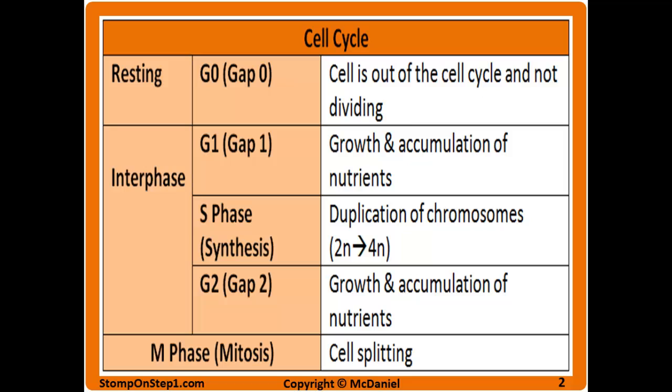Starting with the resting or lazy phase, G0 — in this phase, the cell is out of the cell cycle and it's not dividing or doing really anything at all. It's waiting to be recruited into interphase and the rest of the cell cycle. G1 phase is where we're growing and accumulating nutrients to get ready for cell replication. The S phase is where we double the amount of chromosomal material in the cell so that it can divide into two identical daughter cells. The G2 phase is the second growth phase where we're getting even bigger and preparing to split. And then finally, the M phase, which stands for mitosis, is the actual splitting of the cells.